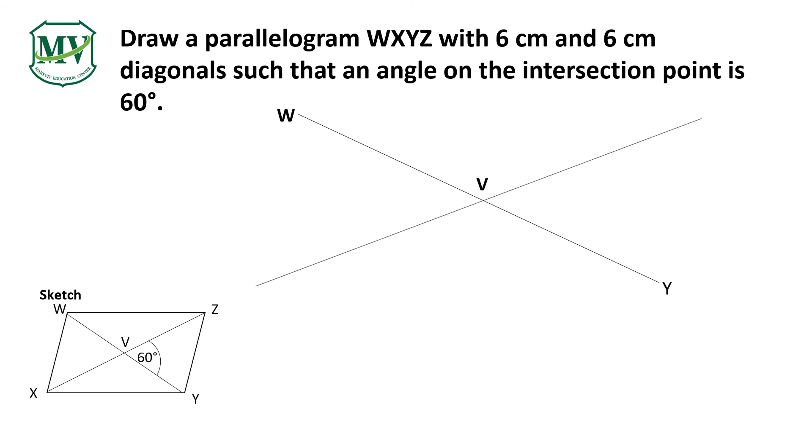Step 2. Draw line ZX passing through point V such that angle ZVY is 60 degrees and line ZV and line VX are equal.